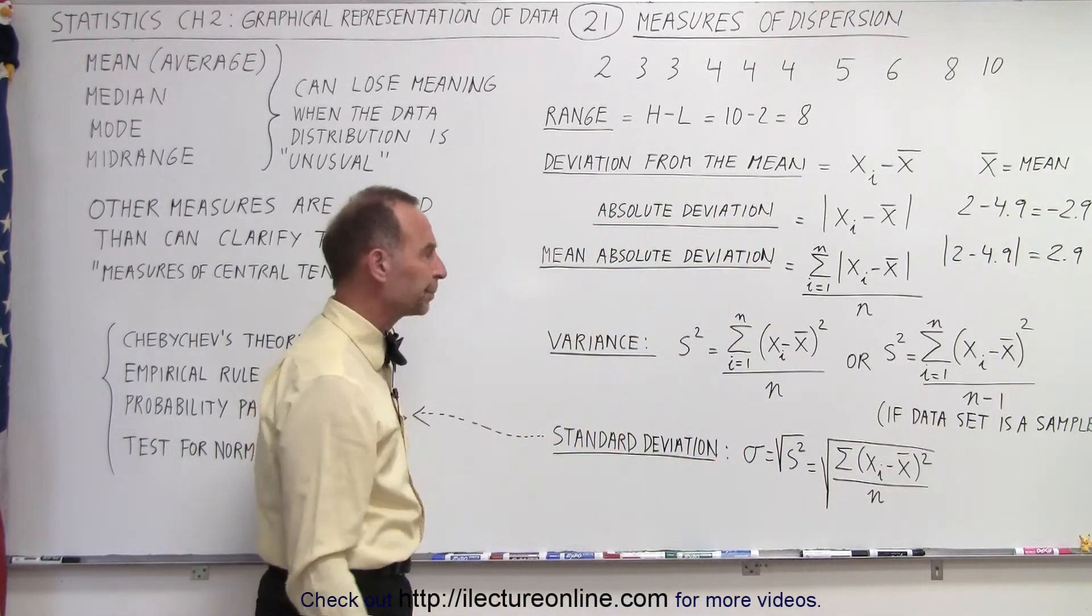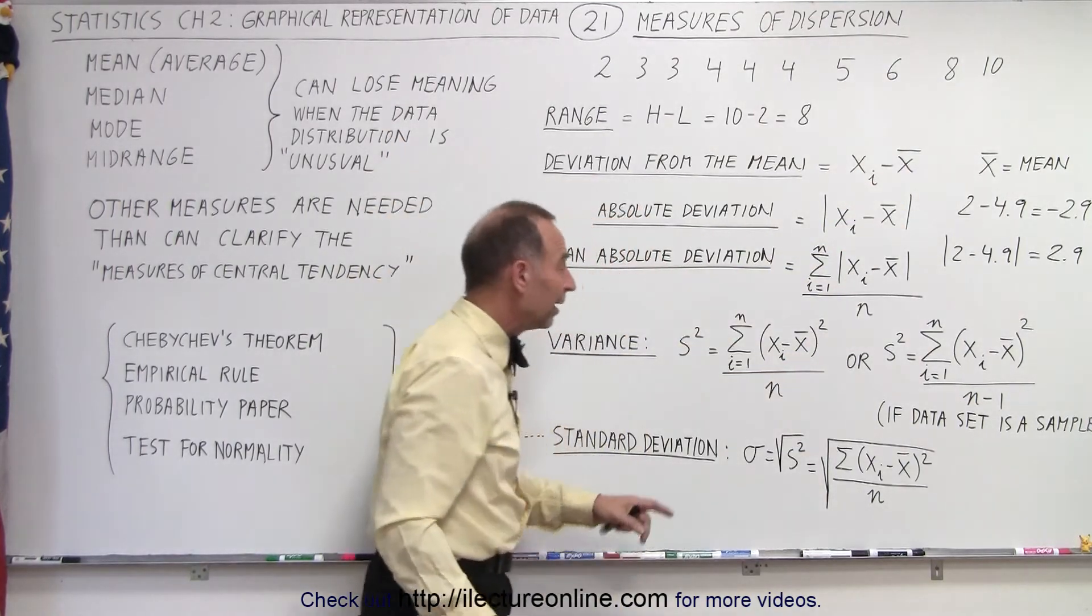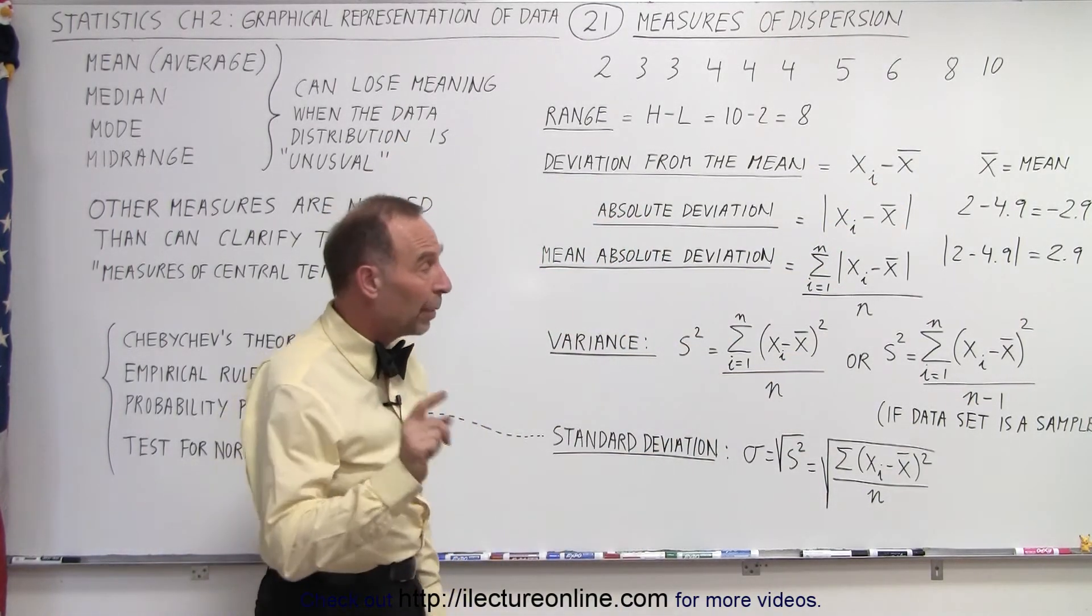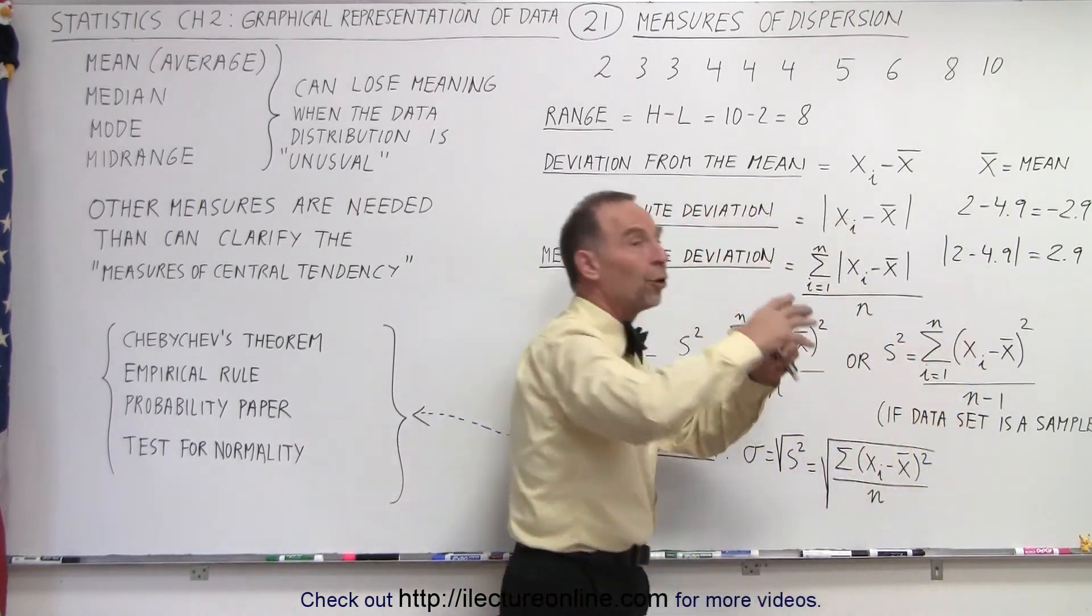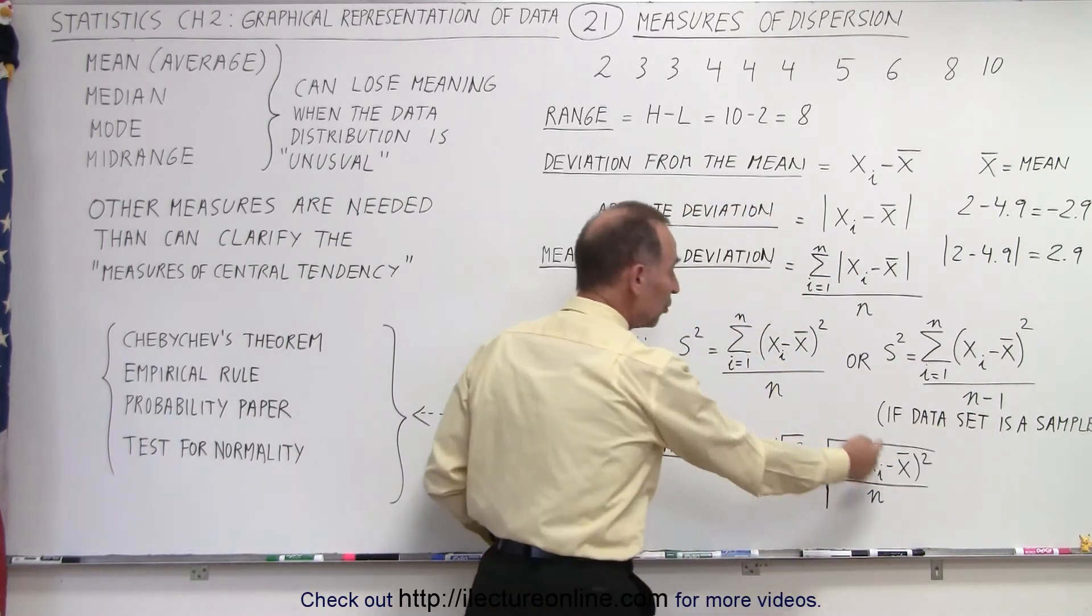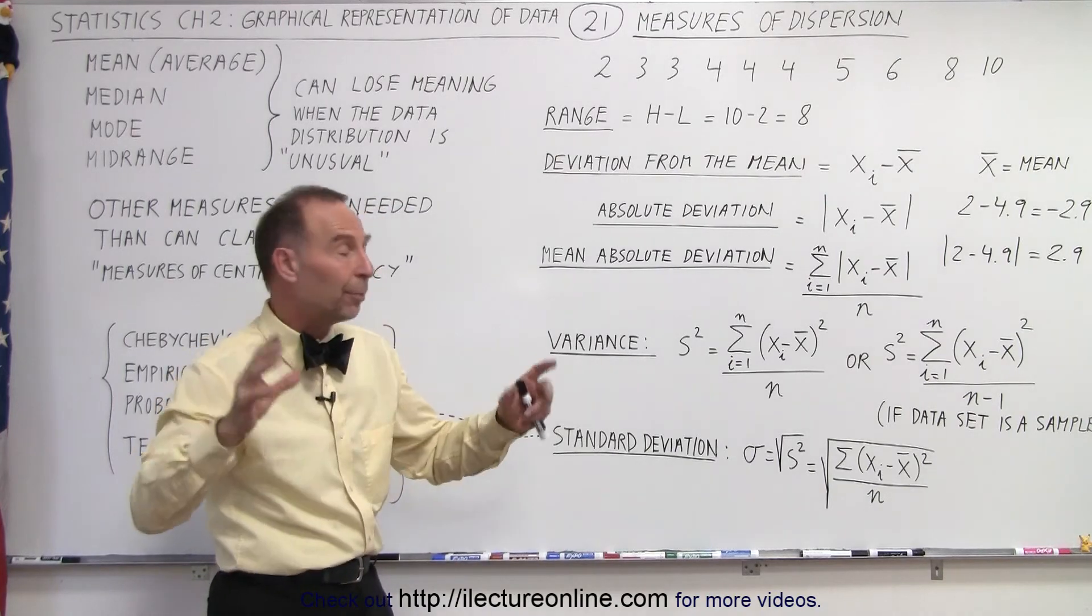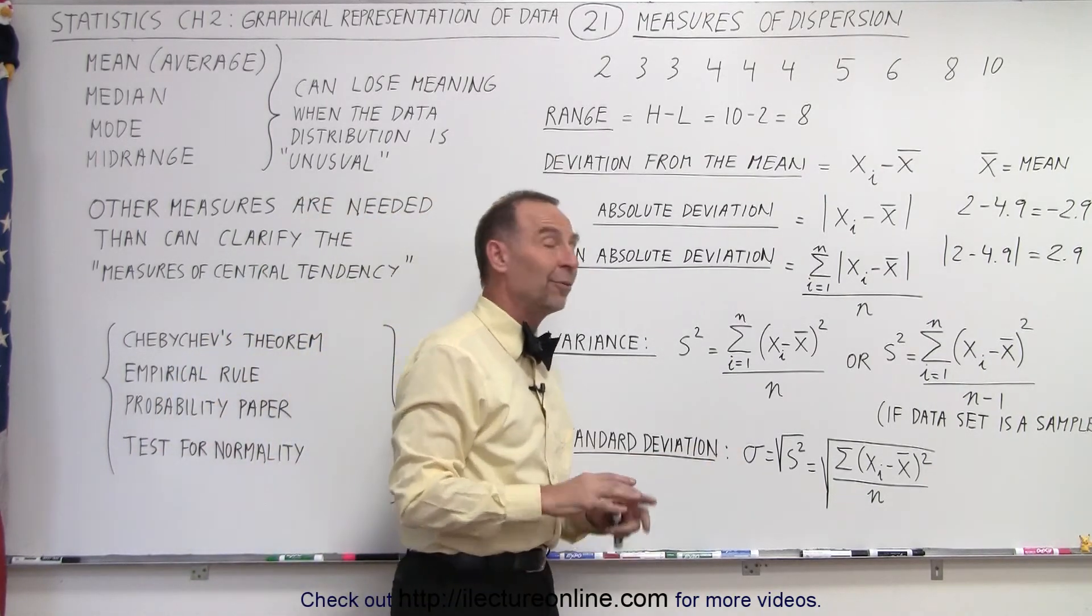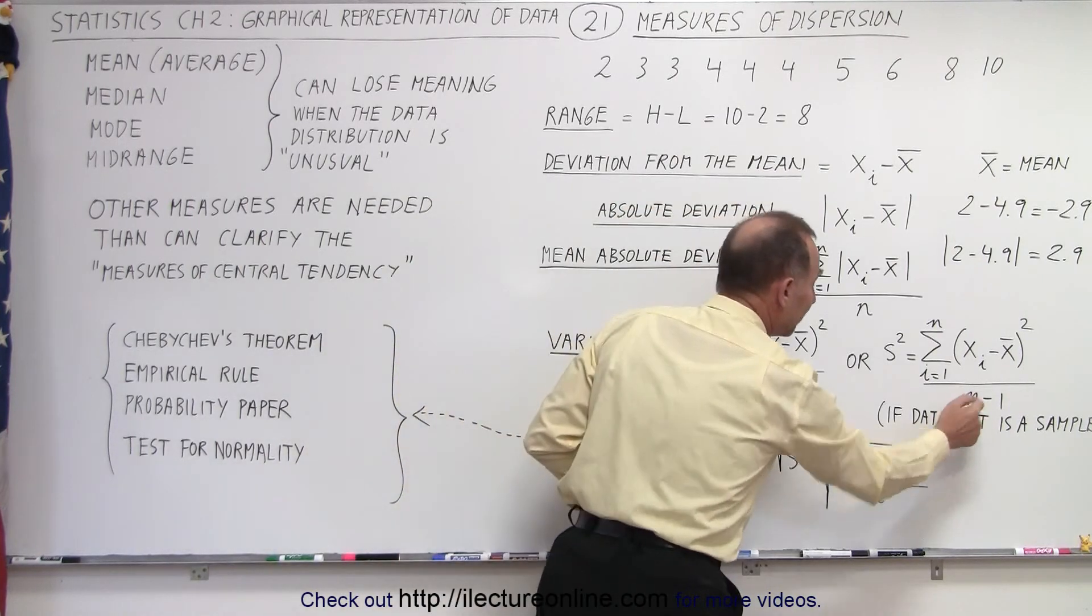Well, if the data set represents all the values, then we divide by n. But if the data set is simply a sample of the whole population, then we divide by n minus 1. And we use the same principle when we deal with the standard deviation. If we simply have all the data points, we divide by n. If our data points that we have is simply a sample, then we divide by n minus 1.